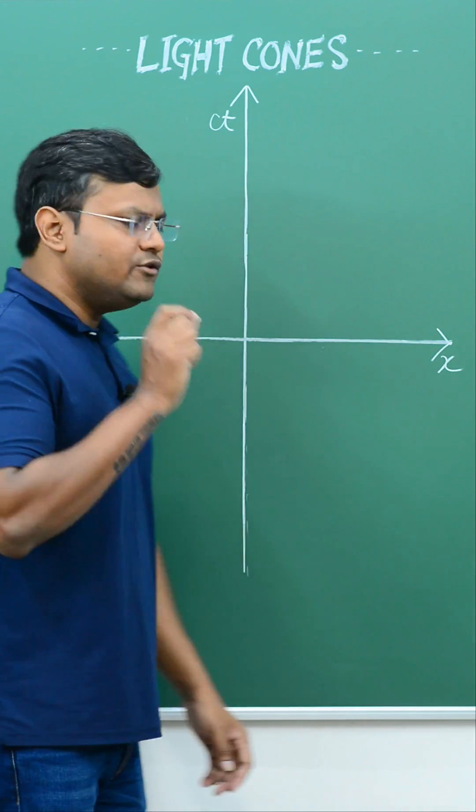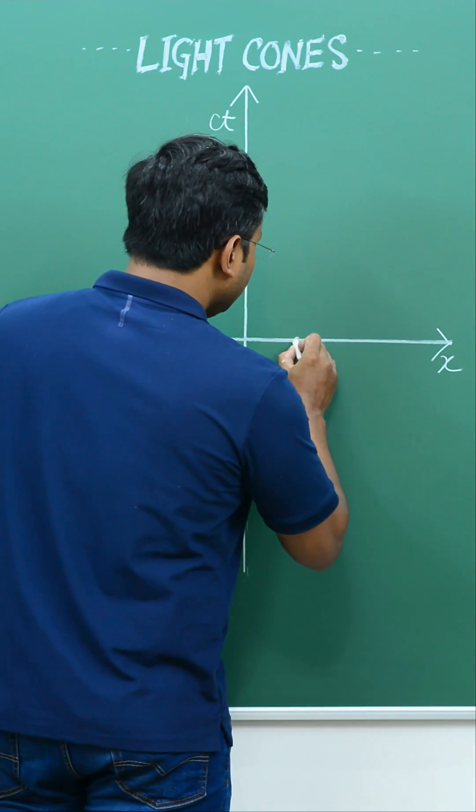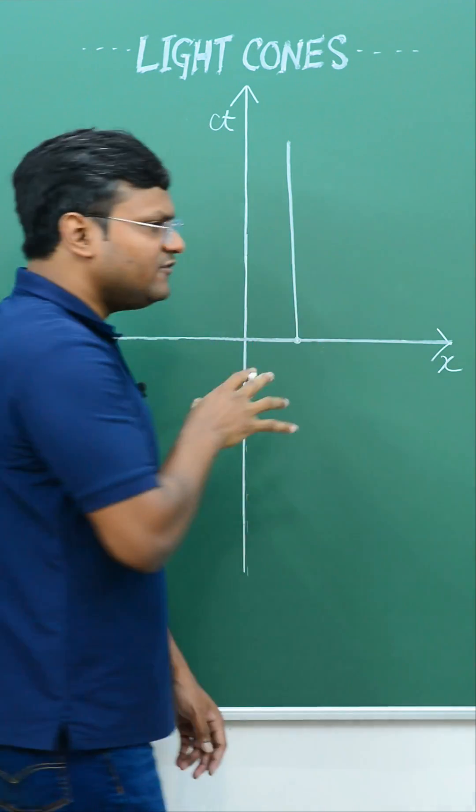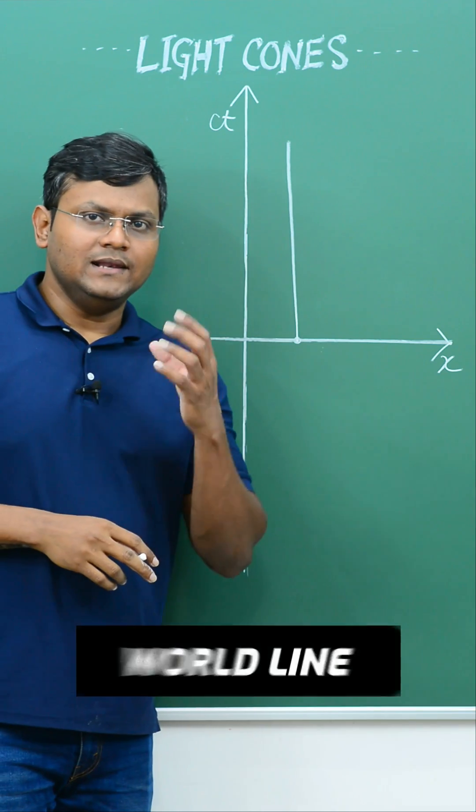then an object at rest will have a trajectory that is a vertical line. This kind of line is known as a world line.